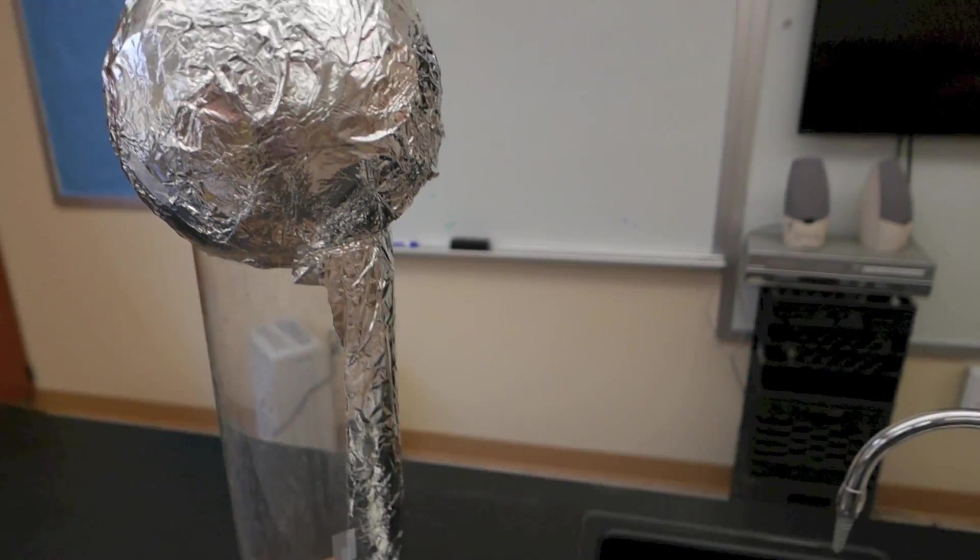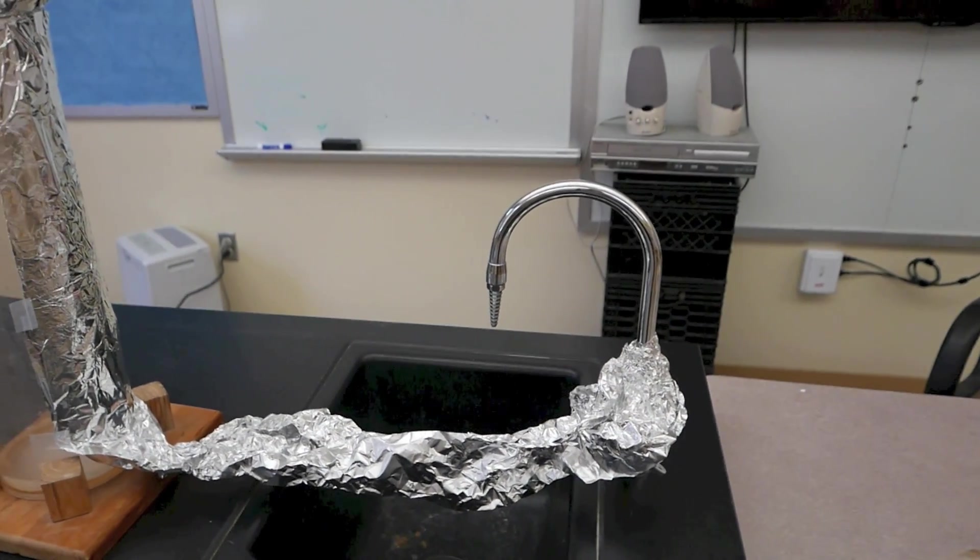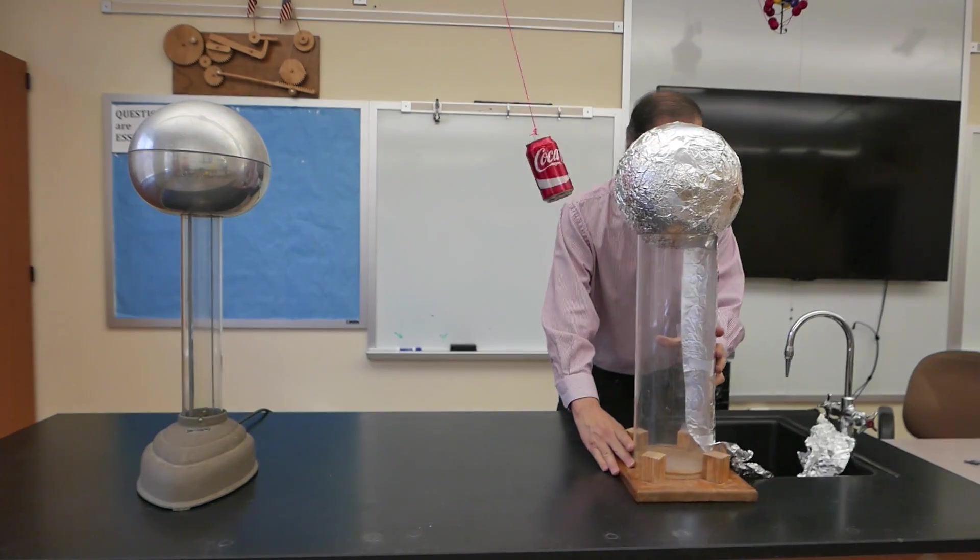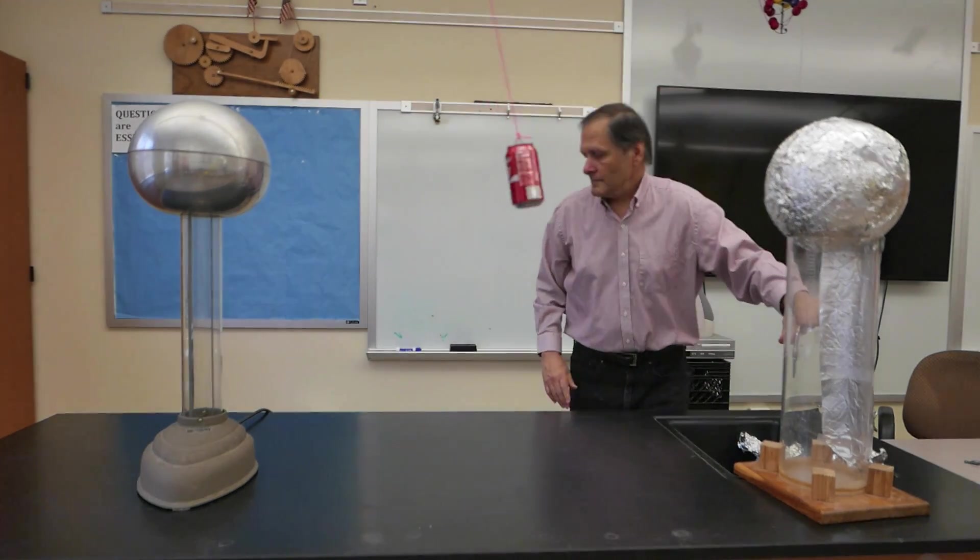The ball is actually a basketball covered with aluminum foil, grounded to the sink. Now I want to replace the ball with my hand while I ground myself to the sink.